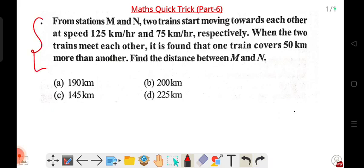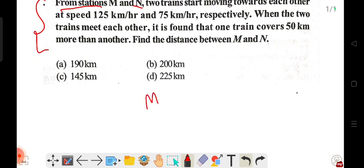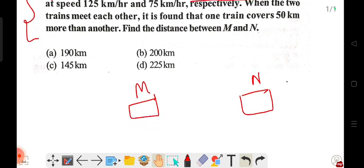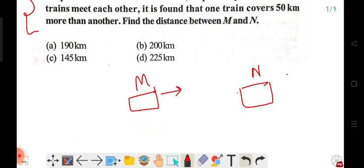Here's the question: From stations M and N, two trains start moving towards each other at speeds of 125 km/hr and 75 km/hr respectively. Moving towards each other means the two trains are traveling in opposite directions from their respective stations.